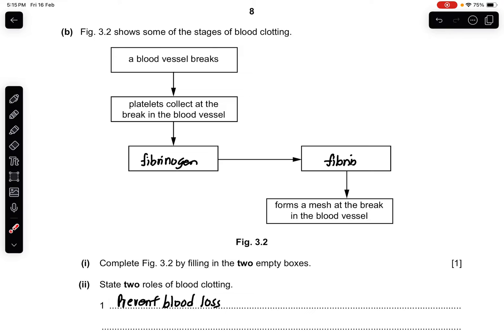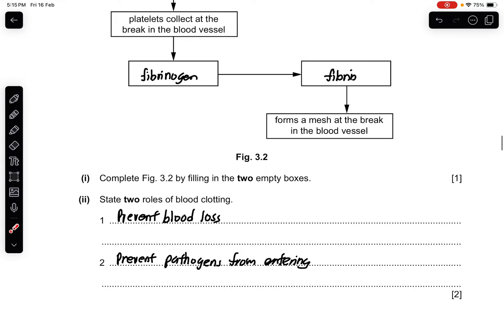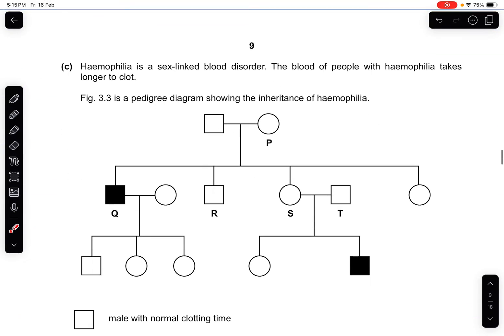Part B: Figure 3.2 shows some of the stages of blood clotting. Complete Figure 3.2 by filling in the two empty boxes. Once platelets are collected, fibrinogen is converted into fibrin, which then forms a mesh at the break in the blood vessel. Part 2: state two roles of blood clotting — first, to prevent the loss of blood; second, to prevent pathogens from entering the blood.